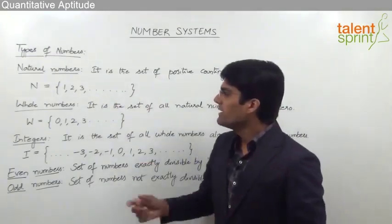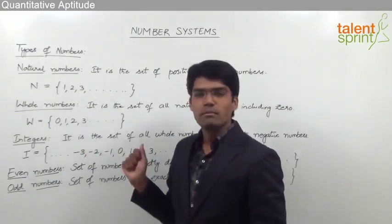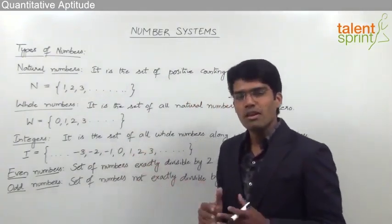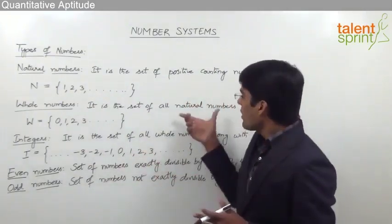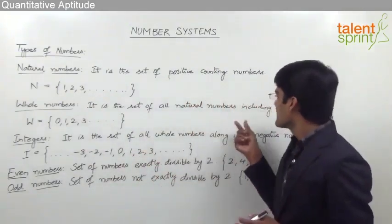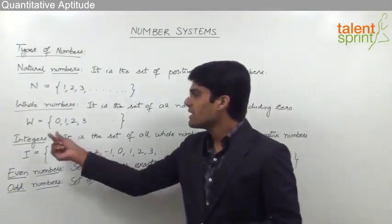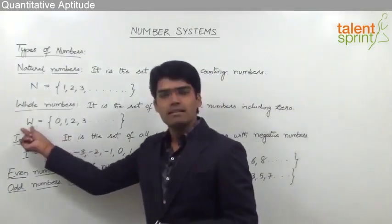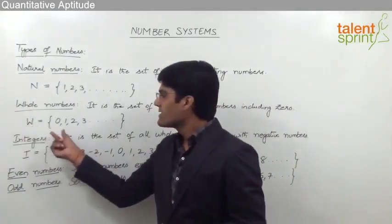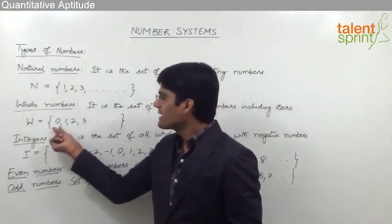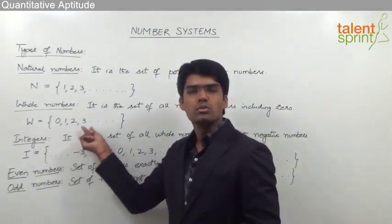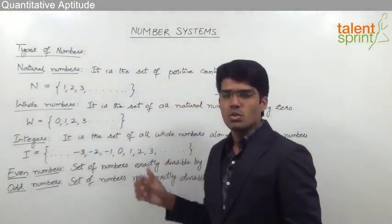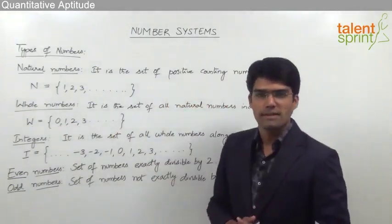The next one is whole numbers. Whole numbers is a set of all the natural numbers including 0. It is generally denoted by the letter W. And as you can see, the set here consists of 0, 1, 2, 3 and so on up to infinity.